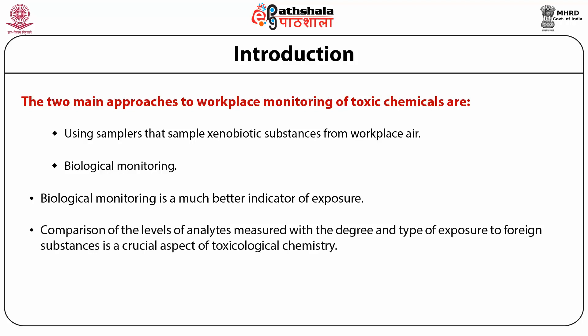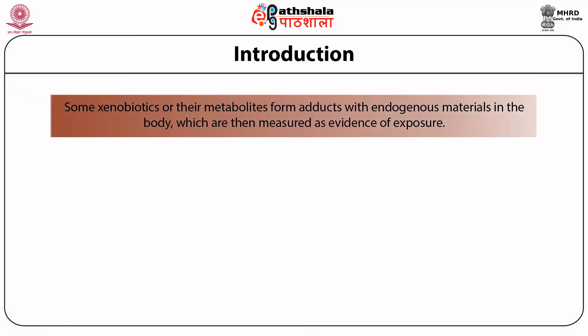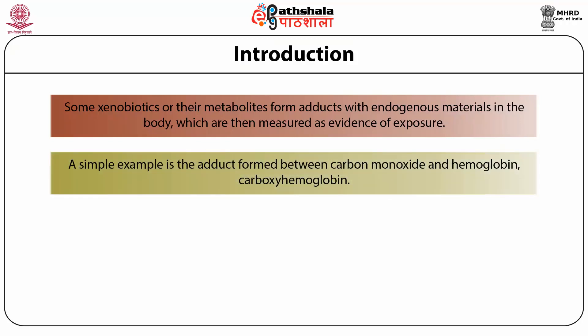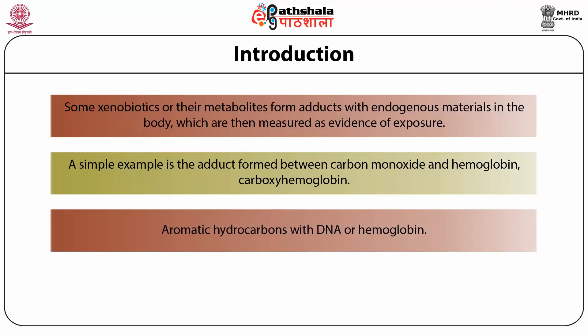Comparison of the levels of analytes measured with the degree and type of exposure to foreign substances is a crucial aspect of toxicological chemistry. Some xenobiotics or their metabolites form adducts with endogenous materials in the body, which are then measured as evidence of exposure. A simple example is the adduct formed between carbon monoxide and hemoglobin — carboxyhemoglobin. More complicated examples include adducts formed by the carcinogenic phase 1 reaction products of polycyclic aromatic hydrocarbons with DNA or hemoglobin.